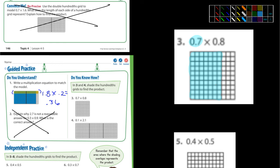And then I'm going to shade the 0.8 in yellow. I'm going to go a different direction. I'm going to go this way. So I'm going to count up eight. One, two, three, four, five, six, seven, eight. You can see that where they overlap would be in this area right here.